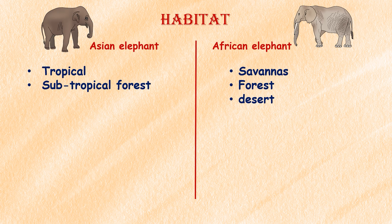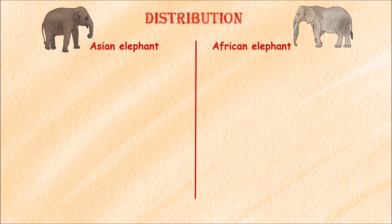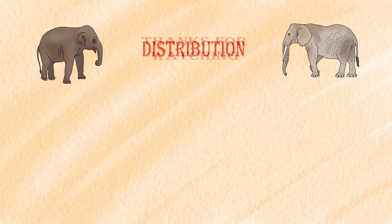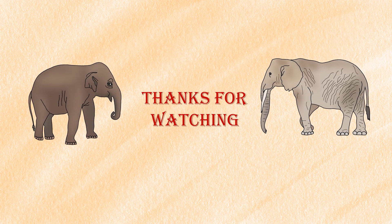Habitat: African elephants are found in a variety of habitats including savannahs, forests, and deserts, while Asian elephants are found primarily in tropical and subtropical forests. Distribution: African elephants are found in 23 countries in sub-Saharan Africa, with the largest populations in Botswana, Zimbabwe, Tanzania, Kenya, Namibia, Zambia, and South Africa. Asian elephants are found in 13 countries in Asia, from India and Nepal to Thailand and Indonesia.